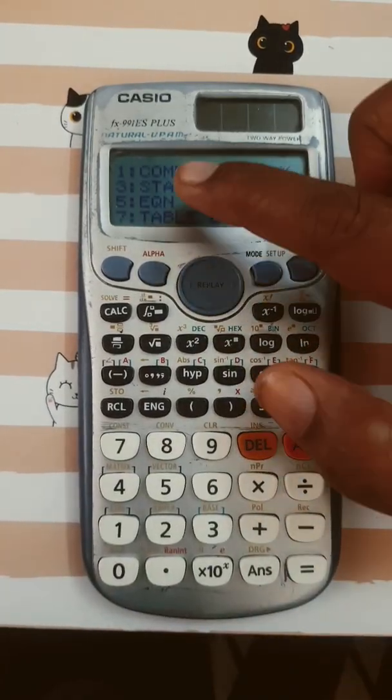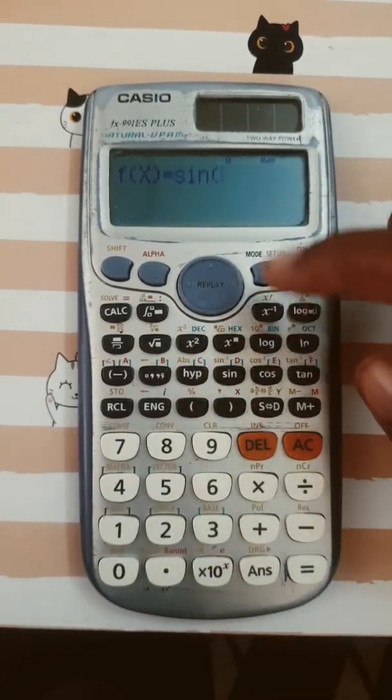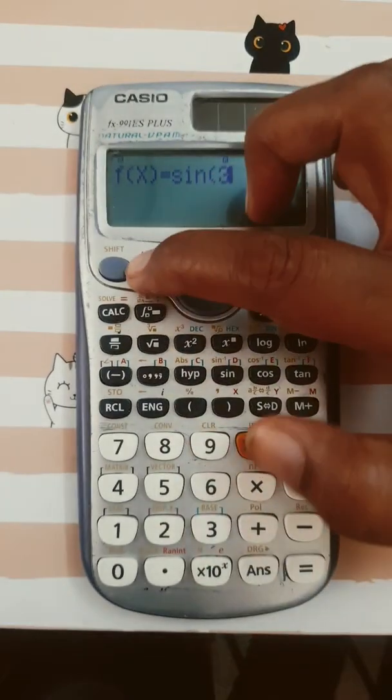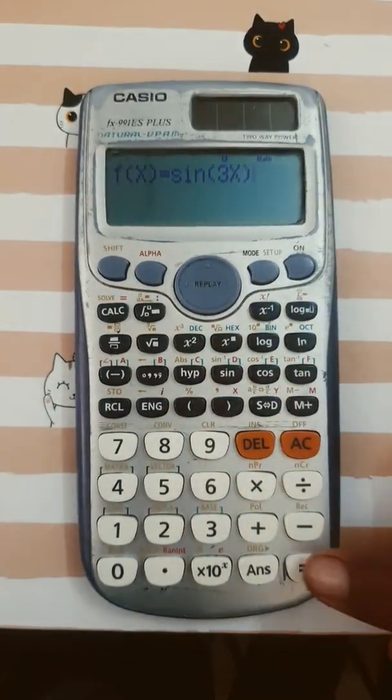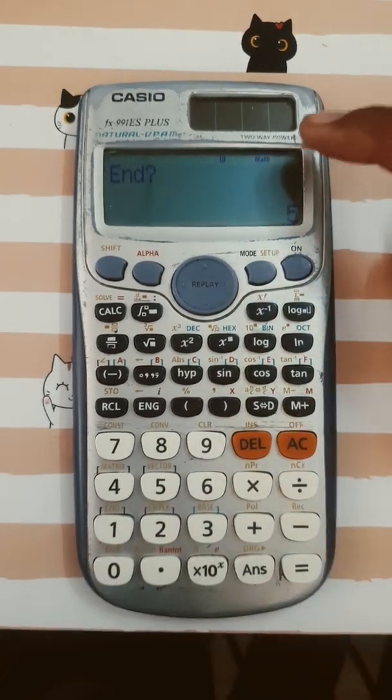Then you have to go with table mode. That is 7. Now you have to write the equation. I am going to write sine 3x, bracket close. Now it is asking for start. Always start with 0.